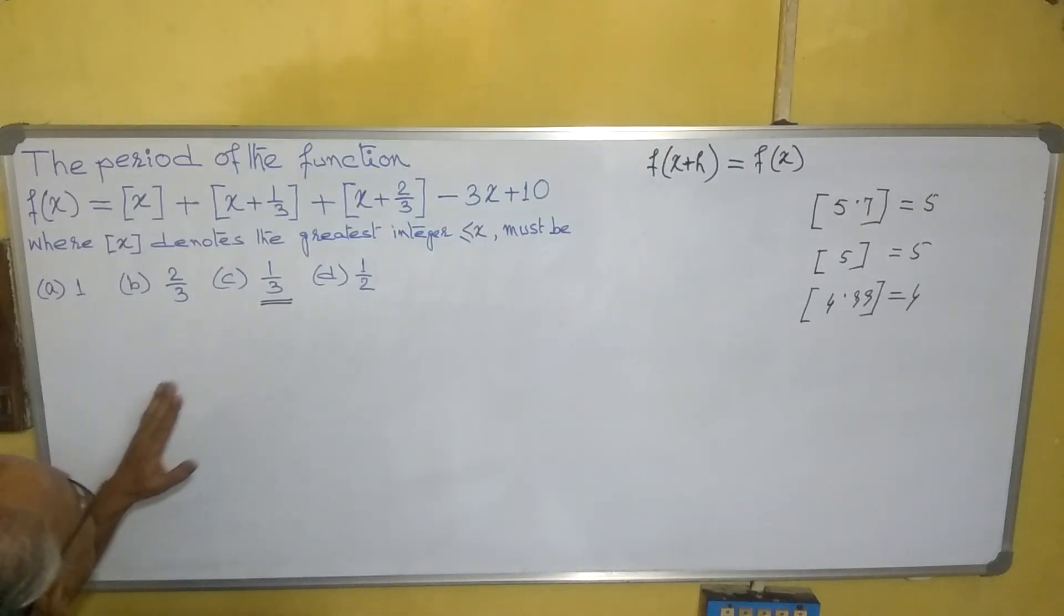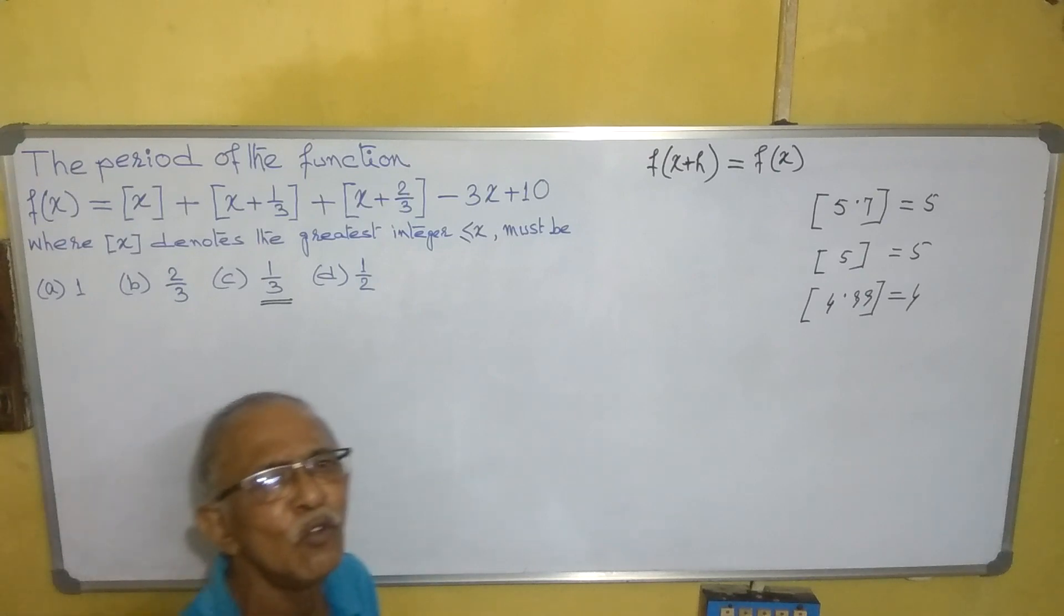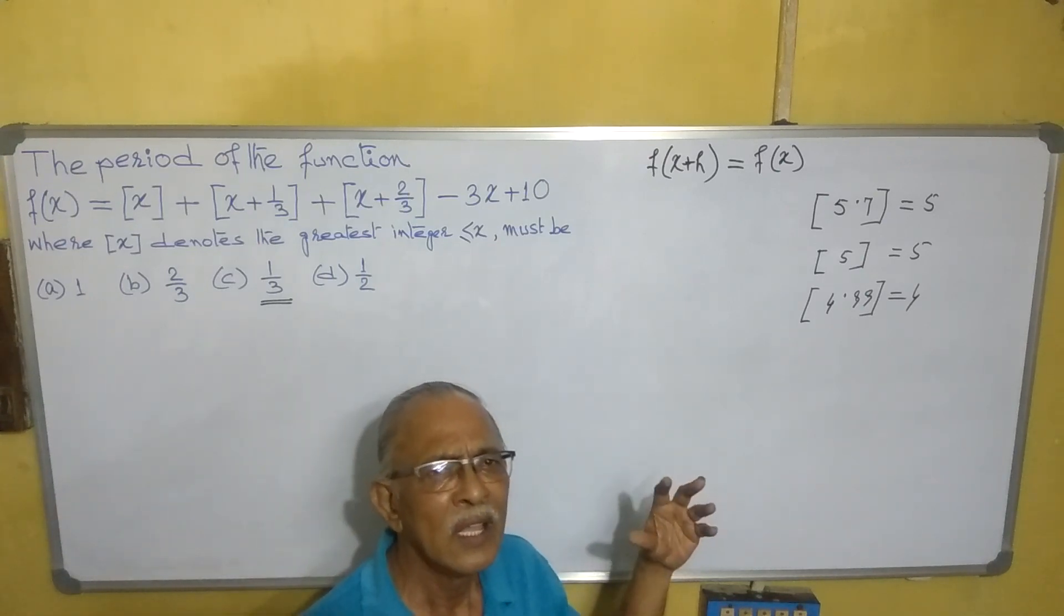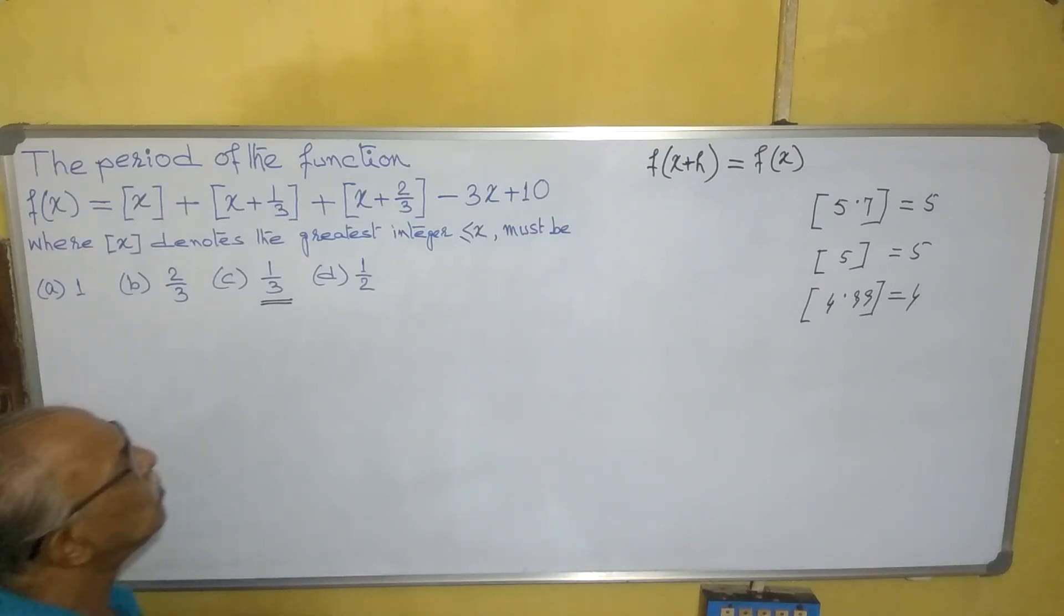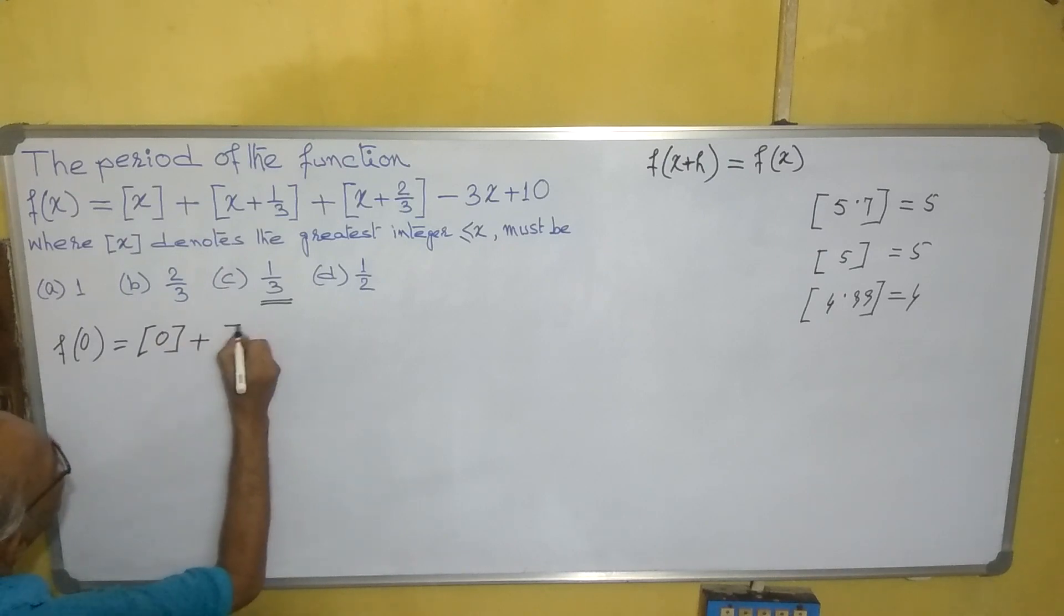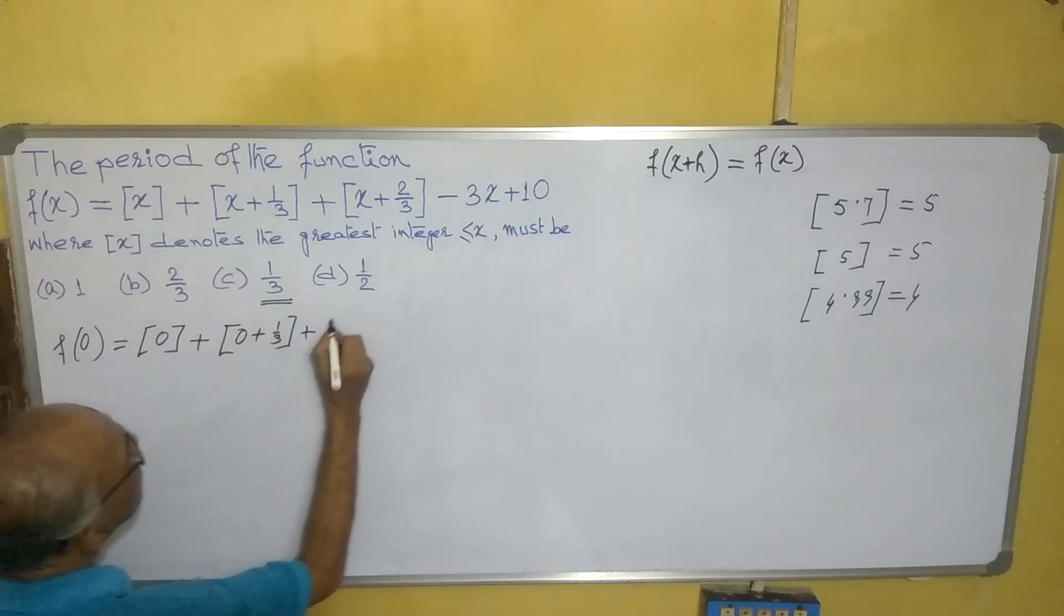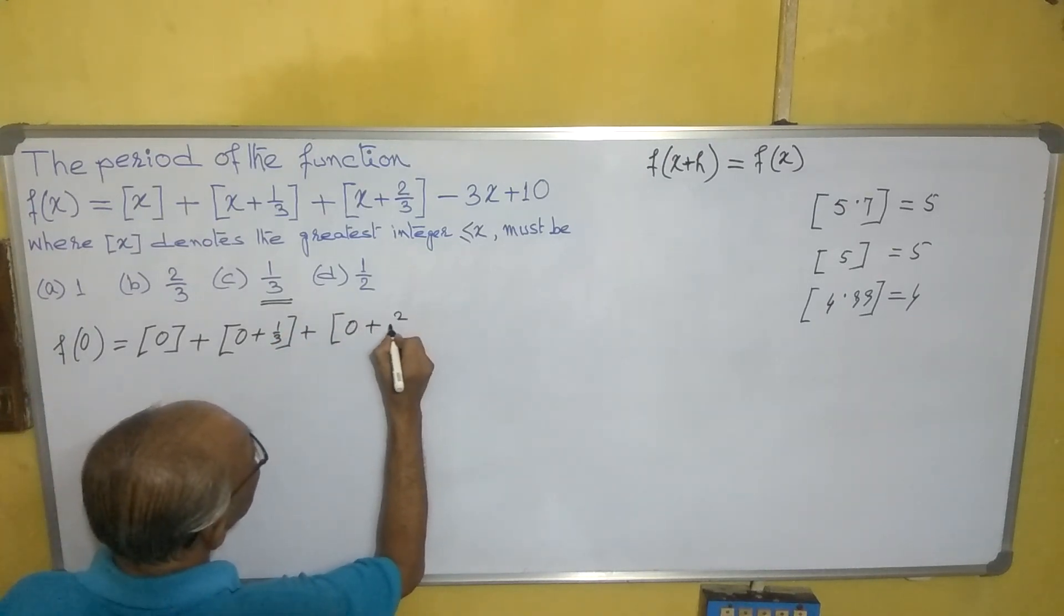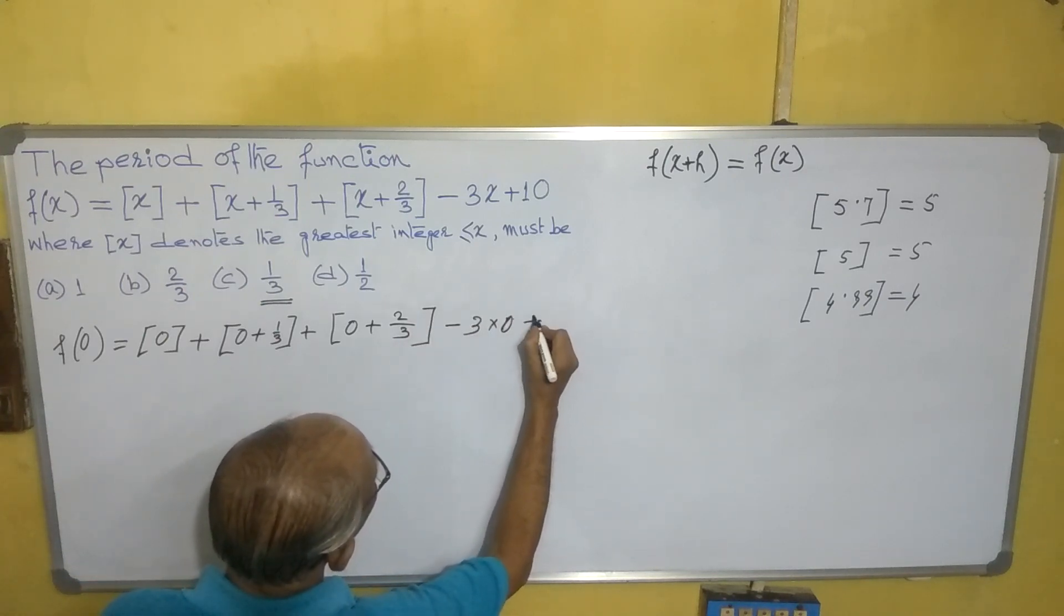So what is x? This relationship is true for any value of x. So whatever it may be, you can take any value of x. Let us assume we are taking 0. So what is coming? f(0) = [0] + [0 + 1/3] + [0 + 2/3] - 3(0) + 10.